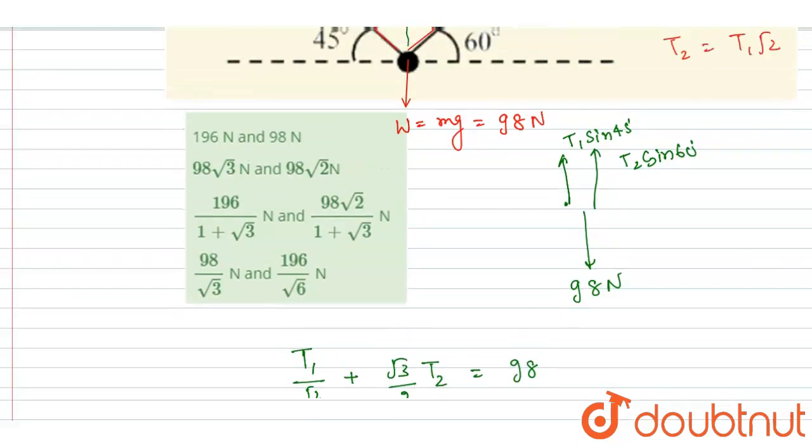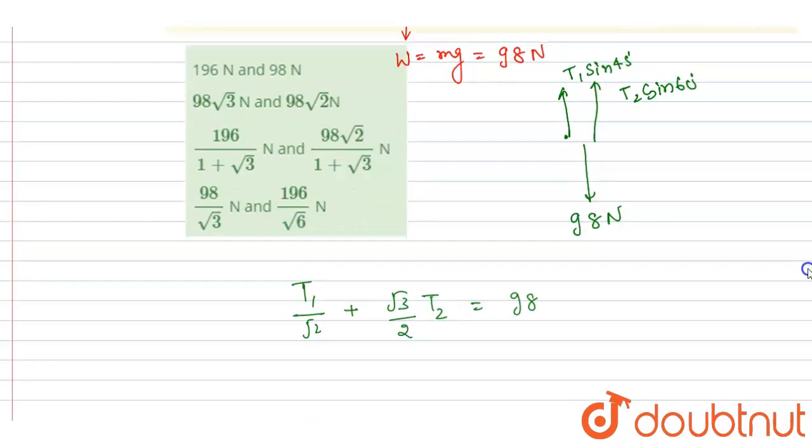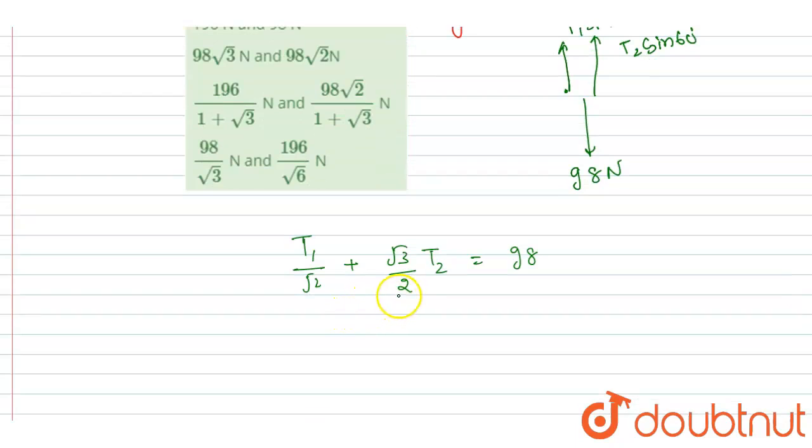98. Now put the value of T2. T2 is T1 root 2. So if I put the value of T2, T2 is T1 root 2.